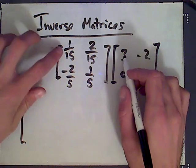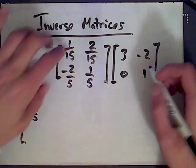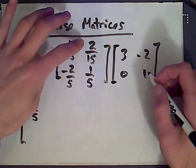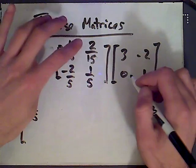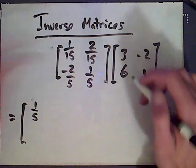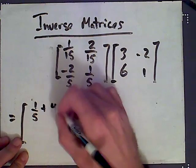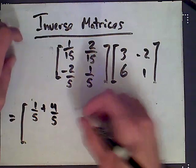Do the opposite multiplication. What do we get? [3, -2; 6, 1] equals—3/15 reduces to 1/5, plus—where are we here—this is 6 plus 12/15, which reduces to 4/5. Negative 2/15.